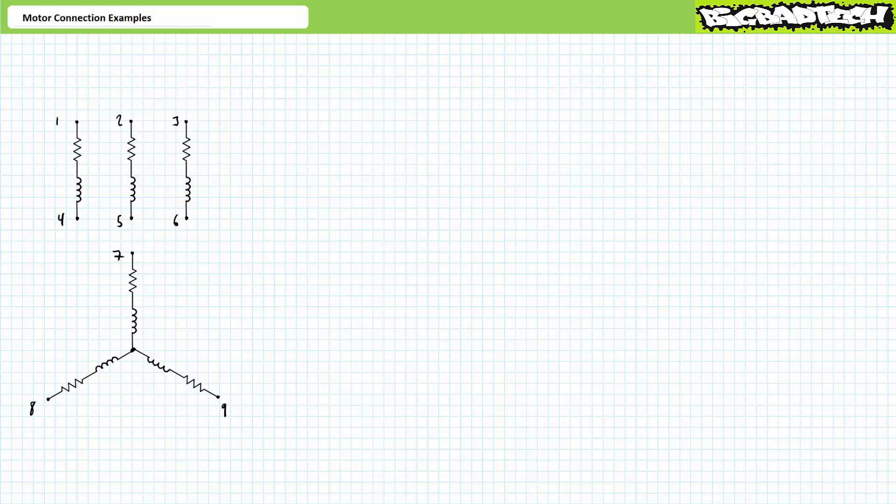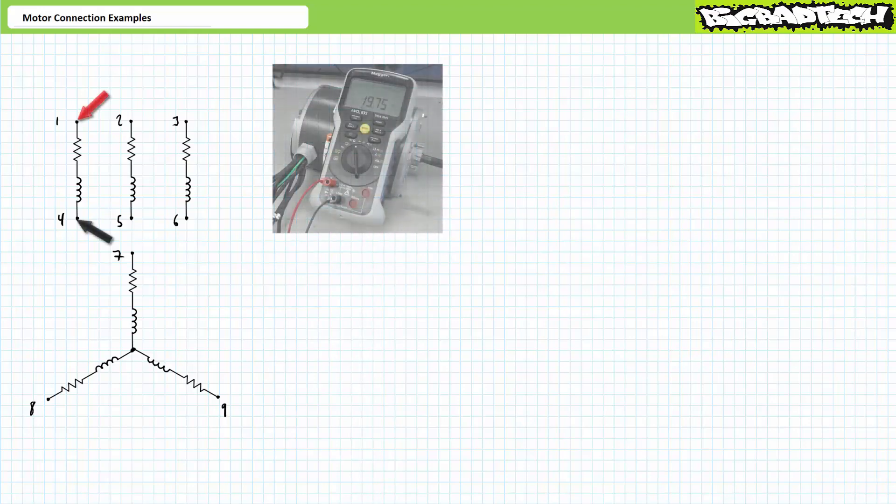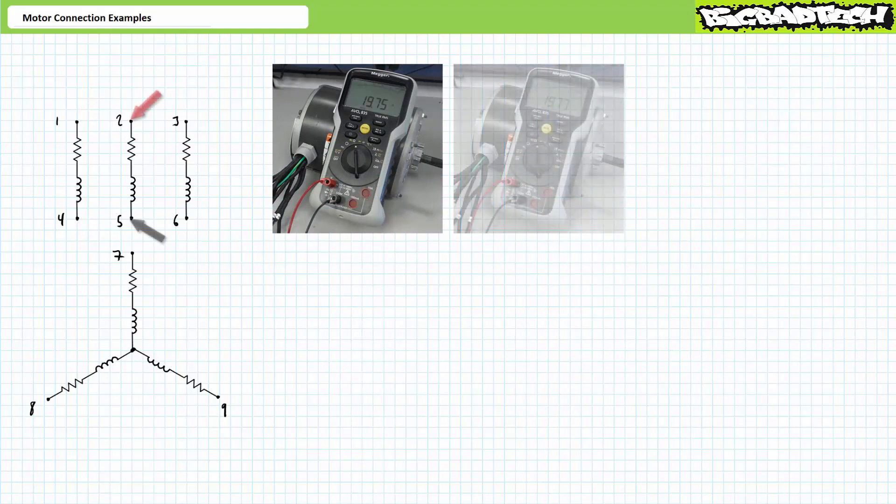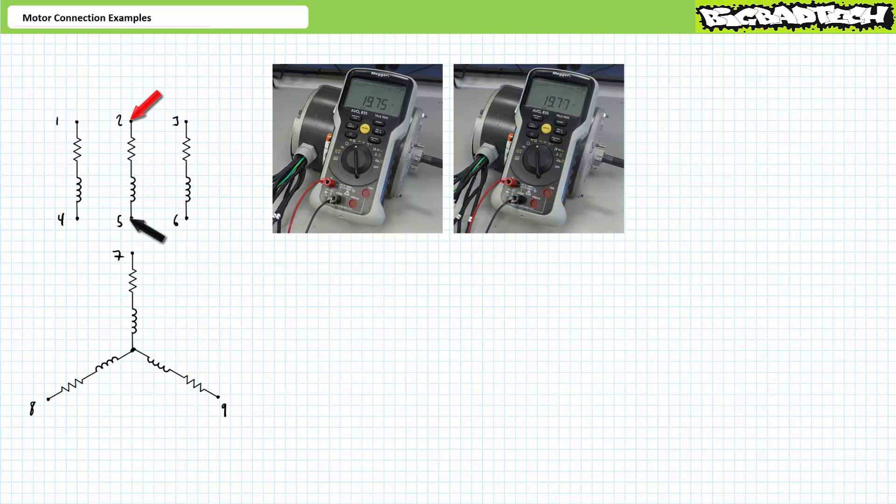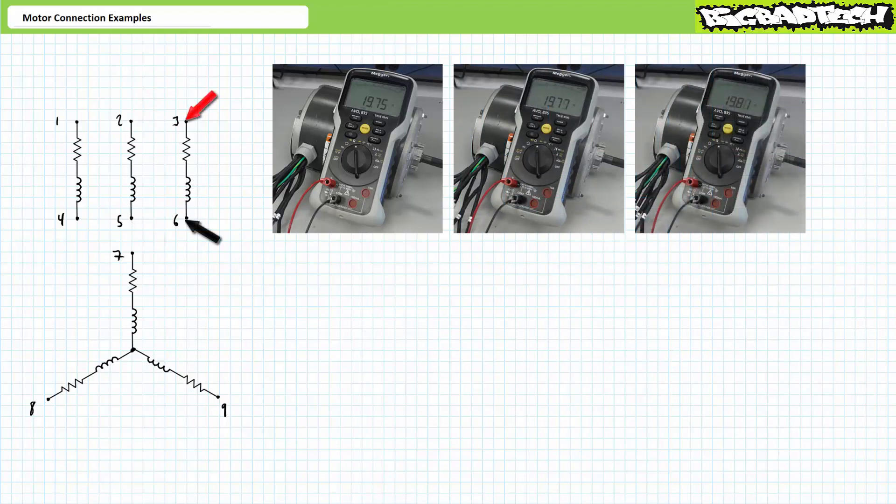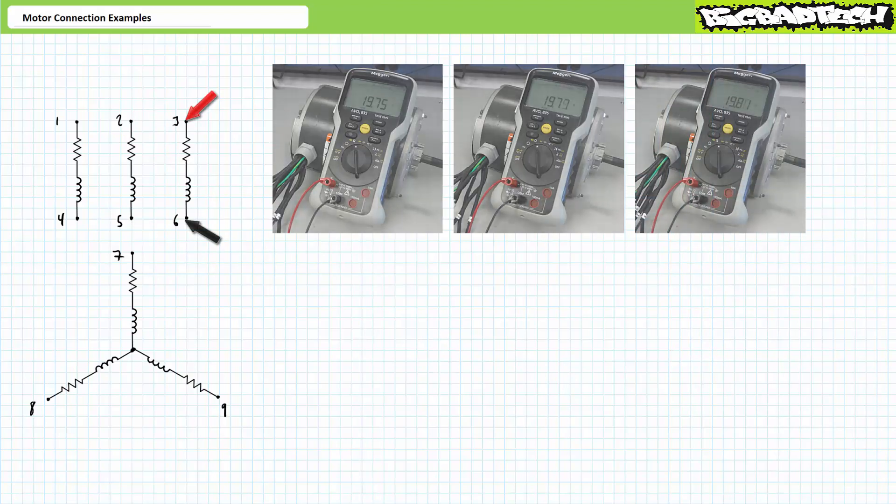Ordinarily three-phase AC motors are considered balanced loads and unless damaged each winding should theoretically have the same resistance. An ohmmeter demonstrates winding one-four has a resistance of roughly 20 ohms. Similarly, winding two-five also has a resistance of roughly 20 ohms. Finally, winding three-six also has a resistance of roughly 20 ohms. It looks like the isolated windings are indeed roughly identical.